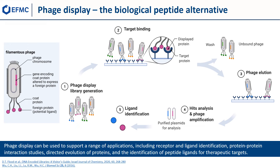Up to this point I have spoken about DNA encoded libraries as the major method for hit finding. Now we turn our attention to an alternative method which is called phage display. It utilizes filamentous phages to express foreign proteins or peptides associated with variations in the gene responsible for the coat protein. The phage library is mixed with an immobilized target and following washing off of the unbound phages, the binding phages are amplified, plasmids purified, and the displayed protein or peptide identified. The technology can be used to identify receptors and ligands, protein-protein interactions, and the directed evolution of proteins and identification of peptide ligands for therapeutic targets.